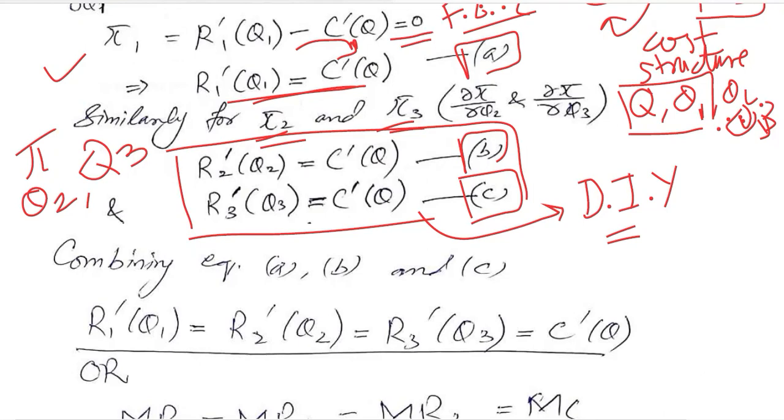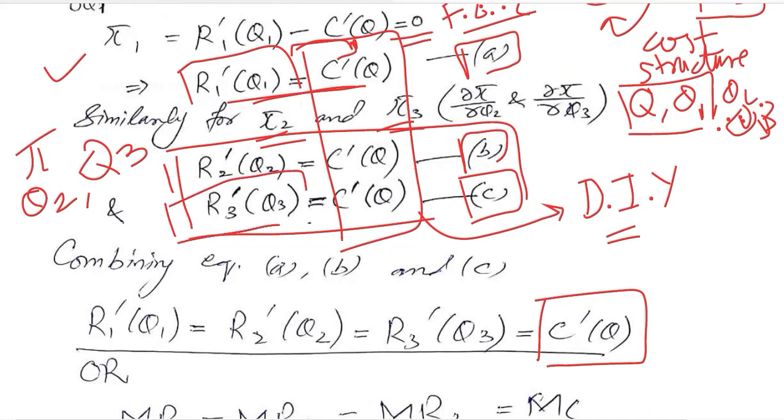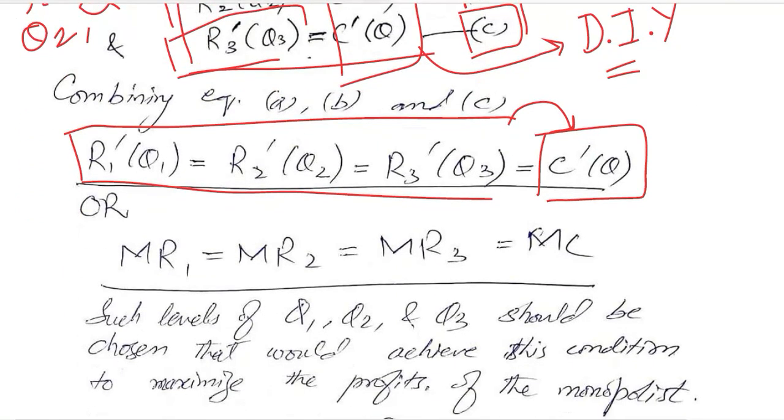Now there is one thing which is common on right hand side of all three of these equations, and it is the rate of change of cost with respect to Q. So we write it here on the right hand side. And since it is equal to R bar Q1, R2 bar Q2, R3 bar Q3, all of them can be equated. So we have written all of them and all of them are equal to C bar Q. Now we can write them in an economic jargon.